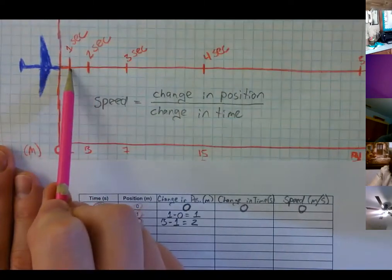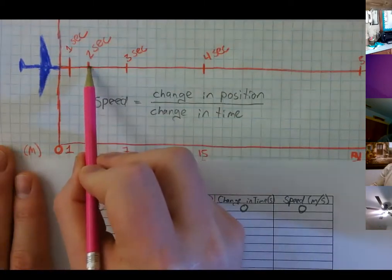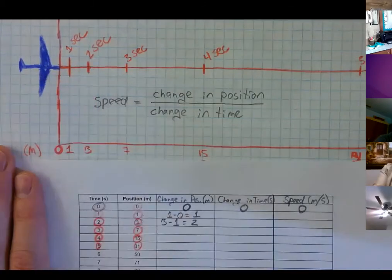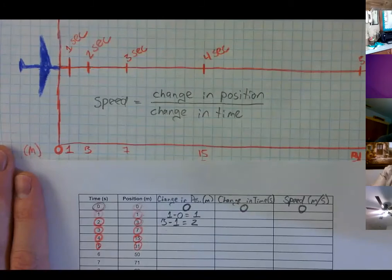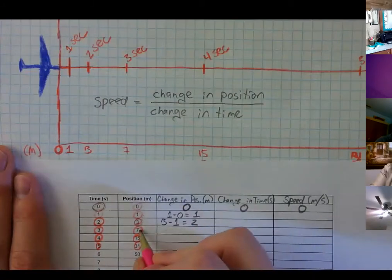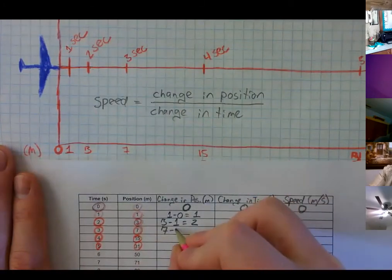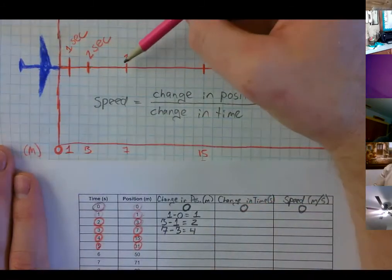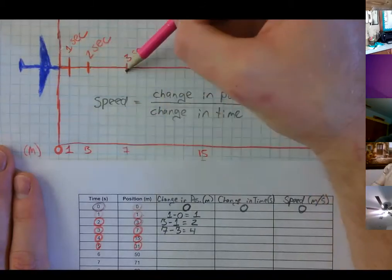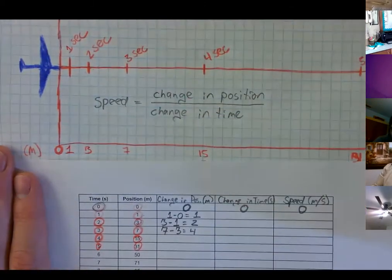Let's look at our visual representation: from one second to two seconds, how many boxes did it move? Two boxes exactly — we're taking three minus one and that gives us two boxes in between. Good. Now the next one: how do we set up this subtraction problem? Seven minus three — it's at seven meters at three seconds, and it was at three meters before. Seven minus three equals four. Let's check our chart: it moved one, two, three, four meters. Very good.